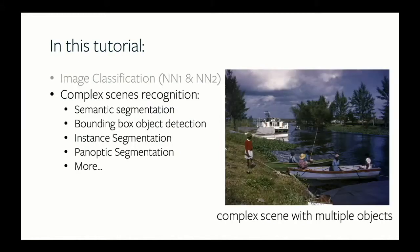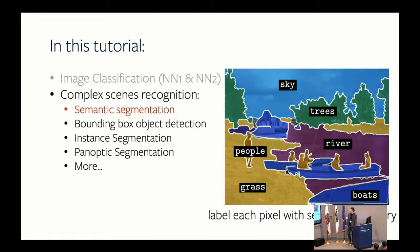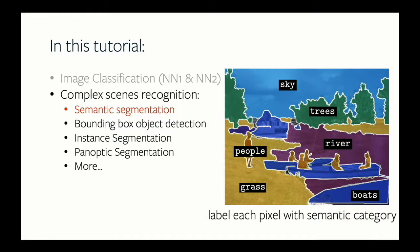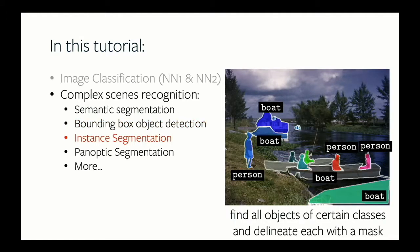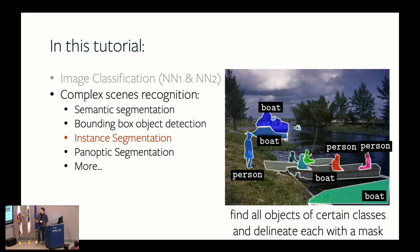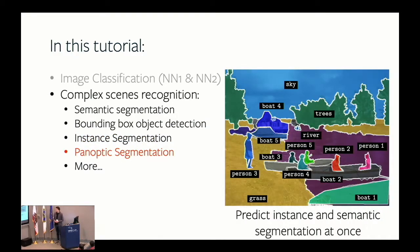What if we have a much more complex scene with multiple objects? There are different recognition problems computer vision scientists are looking at right now. One is called semantic segmentation — it solves a classification problem for each pixel on the image. Then there's bounding box object detection, where we identify all objects of certain classes and delineate them with bounding boxes. Next is instance segmentation, where instead of just bounding boxes we delineate objects with masks. Finally, there's panoptic segmentation, where we predict both instance and semantic segmentation together.